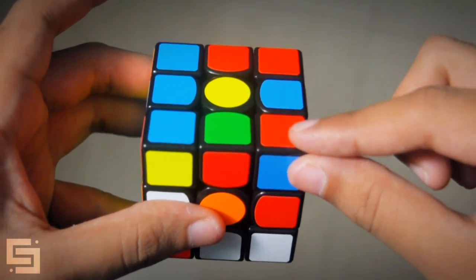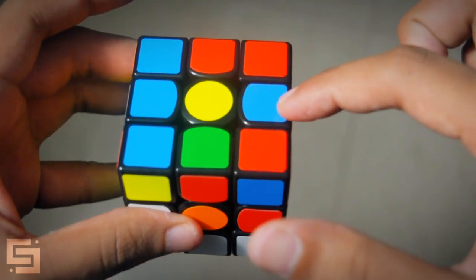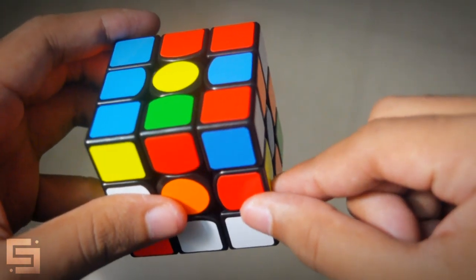Once you do the U move the corner will come in here and then F' is going to put this in the bottom in here. And this edge is going to come in here and the edge is only being affected by the U and R' for inserting the red to the D layer.